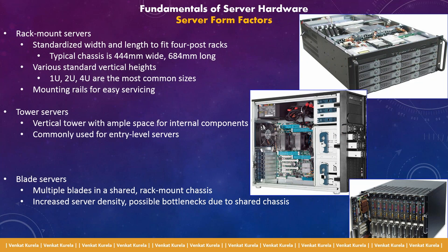In rack-mountable servers, they are available in standard width and length that fit a four-post rack — typically 444 mm wide and 684 mm long. The height varies: 1U, 2U, or 4U. 1U stands for 2 inches. When you say you have a 1U server, that is a server 2 inches in height. 2U stands for 4 inches, and 4U is 8 inches. These servers are mounted to the four posts using rail kits.